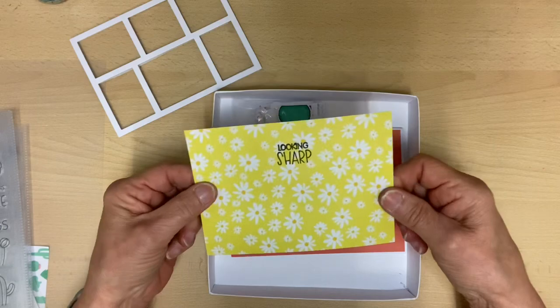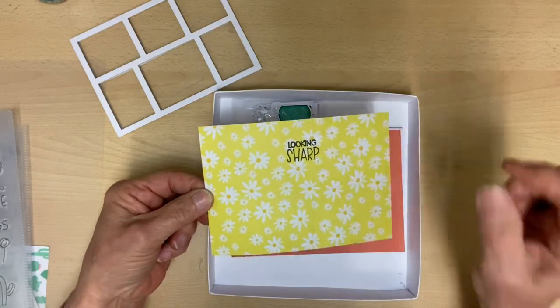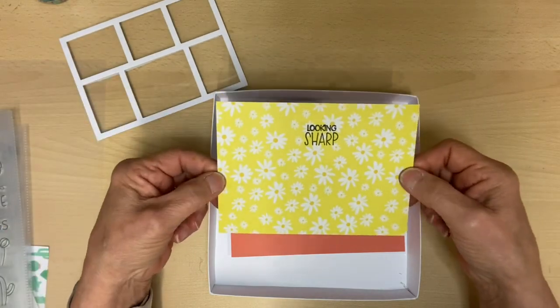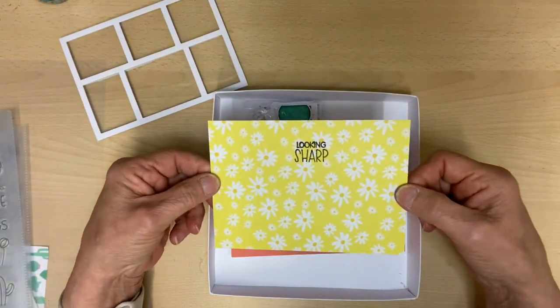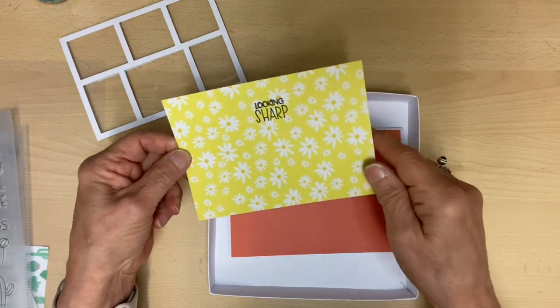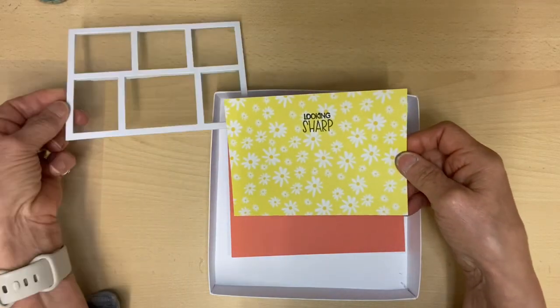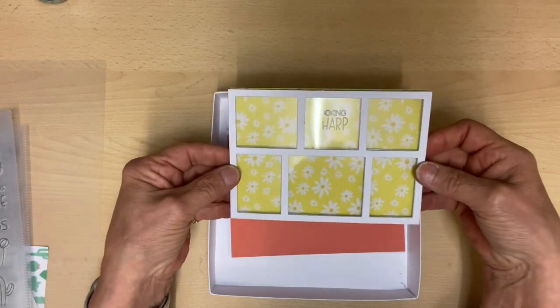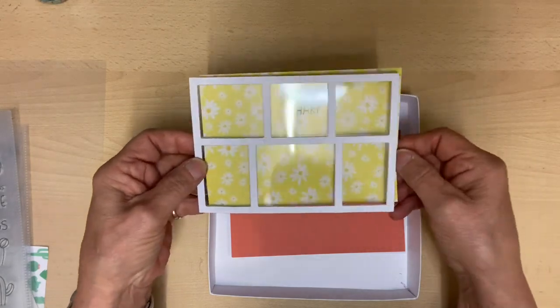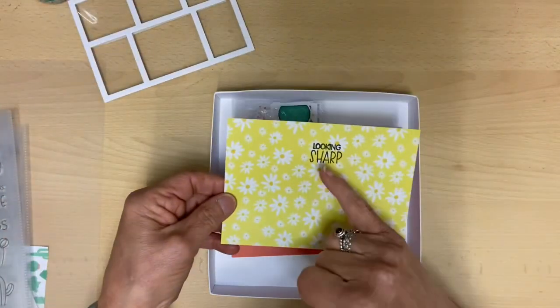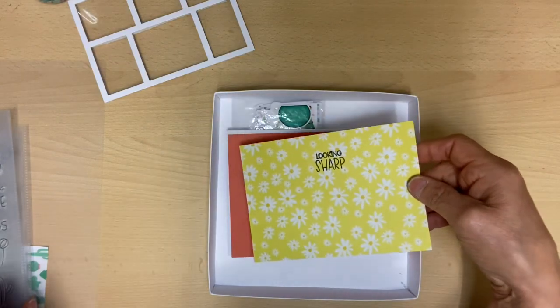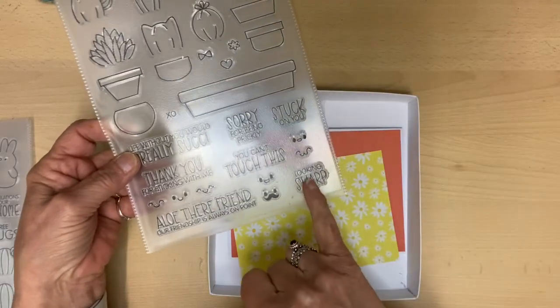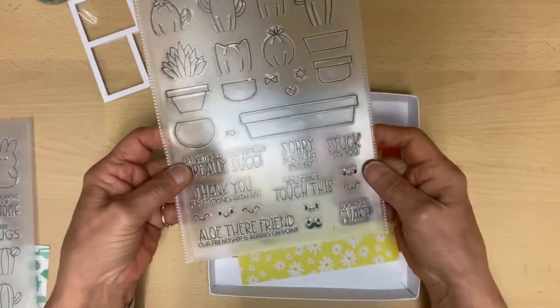I've taken a piece of the pattern paper that's in the kit and again cut that down. That measured five and three quarters across by four and one eighth, so again it's just slightly shorter than that, and that's going to stick behind there.